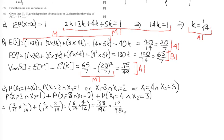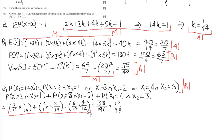Cancelling 38/196 gives 19/98. For marks: a statement mark for clearly identifying the ways X₂ = 1 + X₁ can occur, a method mark and accuracy mark for correctly multiplying and summing the independent probabilities, and a final accuracy mark for 19/98.